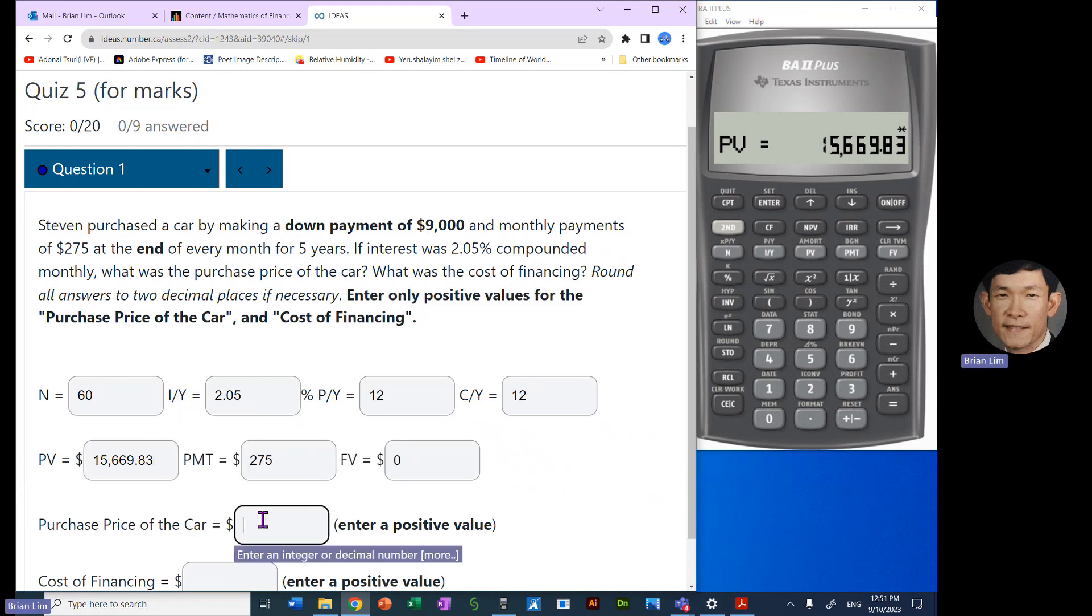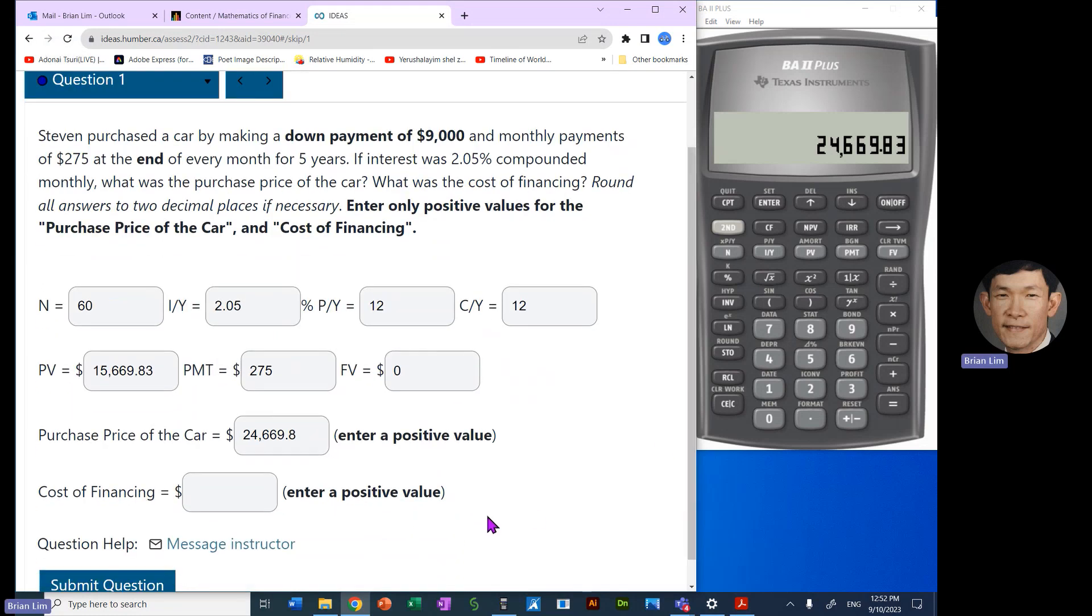But that is not the purchase price of the car. To get the purchase price of the car, we must now add the down payment of $9,000. So there's the present value. So we must put plus this down payment right here of $9,000. So plus $9,000, that gives us the purchase price of the car, $24,669.83. Okay, so that has been calculated.